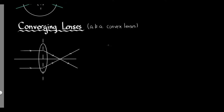Let's start off with why the converging lens converges. Basically, if you have a converging lens that looks something like this, the light rays are going to pass through. If you draw the normal, as we know from going from air to glass, the light ray is going to bend towards the normal.